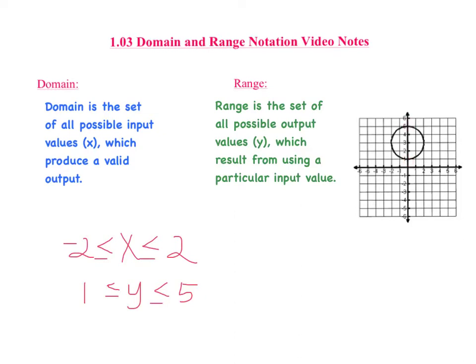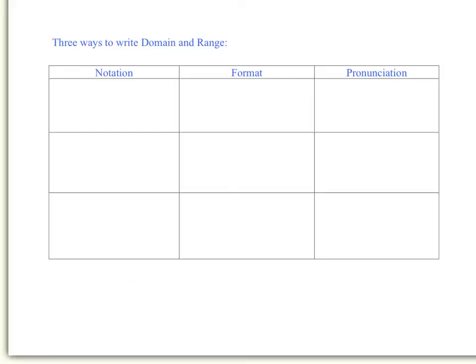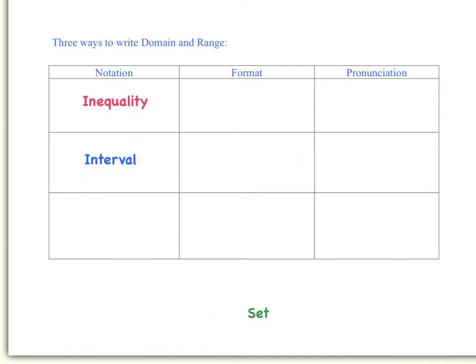Now let's move on and see the different ways we can express or write domain and range. We will learn three different notations, or ways to write domain and range: inequality notation, interval notation, and set notation.